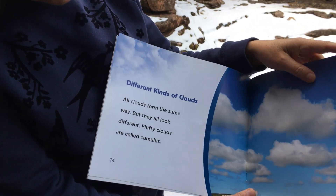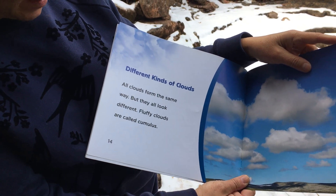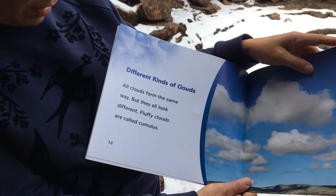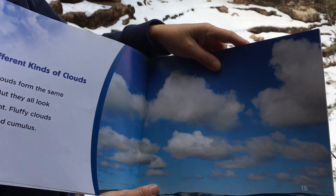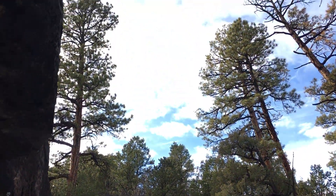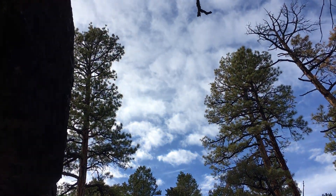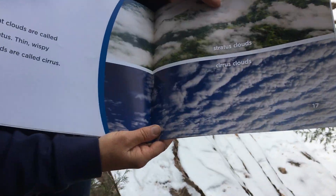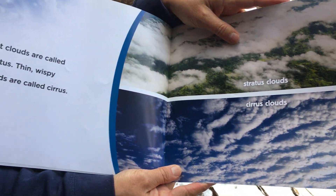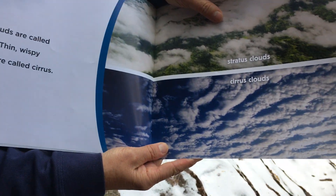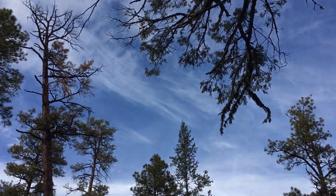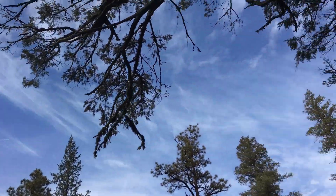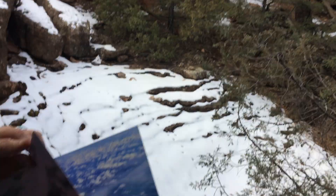All clouds form the same way, but they all look different. Fluffy clouds are called cumulus. Flat clouds are called stratus. Thin, wispy clouds are called cirrus clouds.